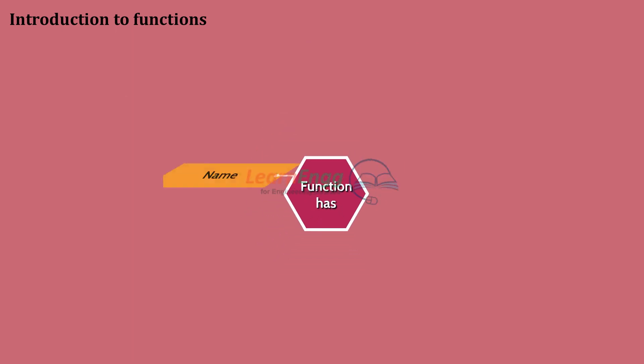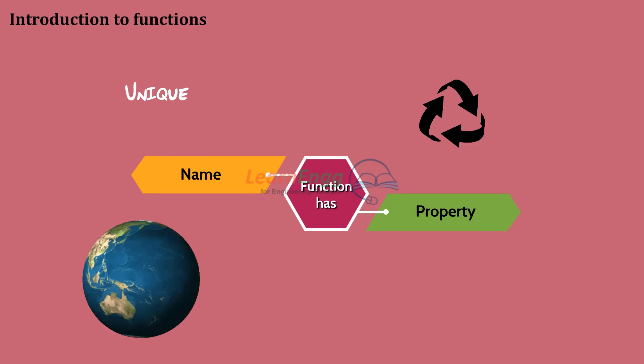A function is a block of code that has a name and it has a property that is reusable. The name of the function is unique in a C program and is global. It means that a function can be accessed from any location within a C program.